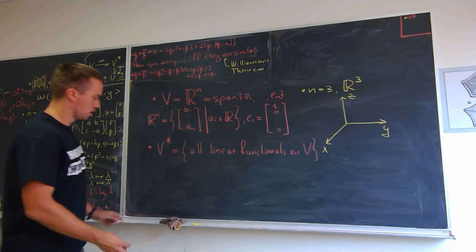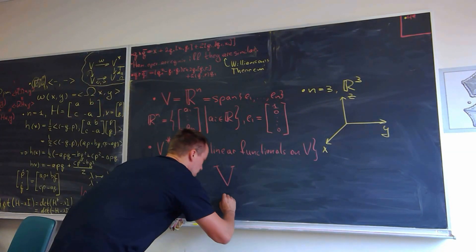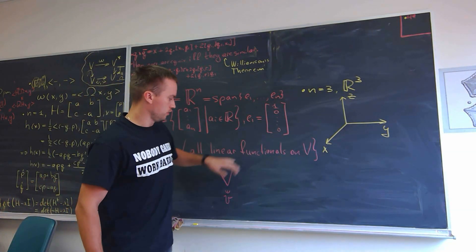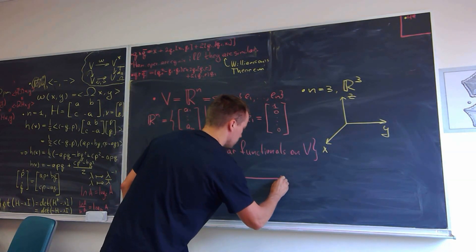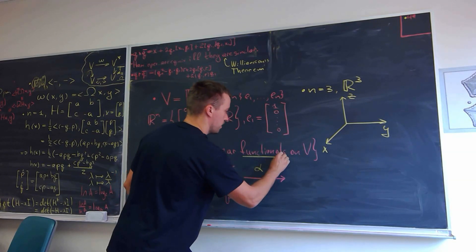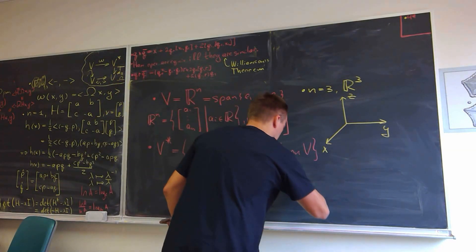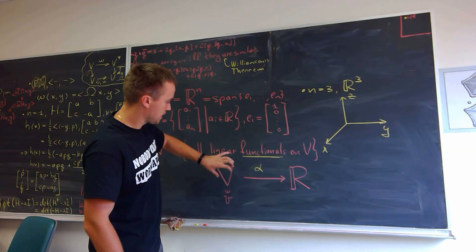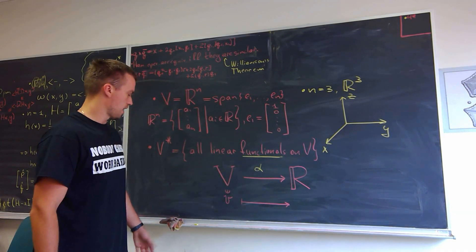So what do I mean by that? I'm going to take my vector space V, and in this vector space V I'm going to choose some vector. A linear functional on this vector space means every time I choose a vector, I consider a map — and this map I'm going to call a functional. Let's call it alpha. So alpha is going to be my functional, and my vector space is going to be mapped to the real numbers. Every time a functional like that takes a vector from the vector space and maps it to some number.